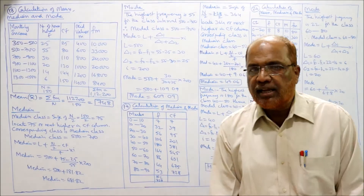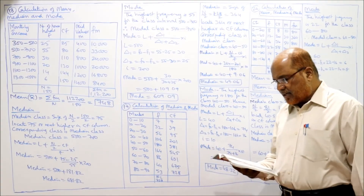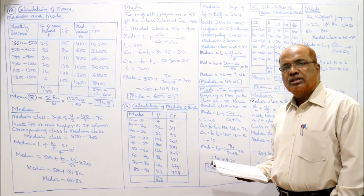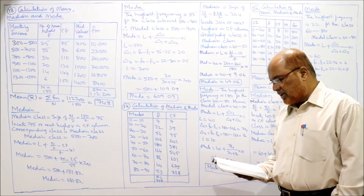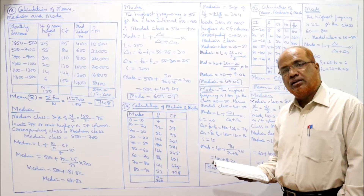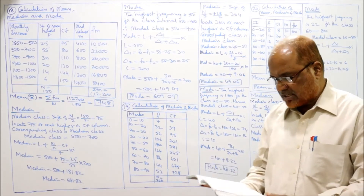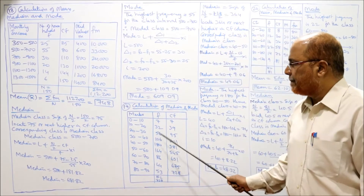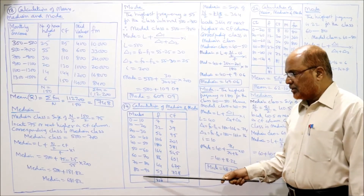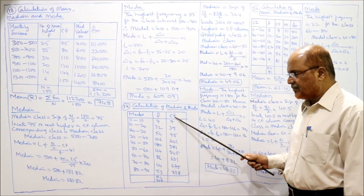Now we start the 19th problem. Calculate median and mode for the following data. Marks: 0–10, 10–20, 20–30 — it is a continuous series. Frequencies are given: 7, and others including 56. As usual, calculation of median and mode: marks and frequencies are given in the problem. We calculate CF (cumulative frequency). We do not need mid values since mean is not required — only CF is needed.